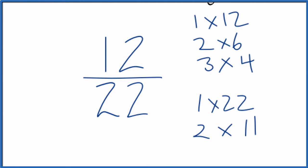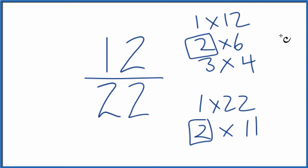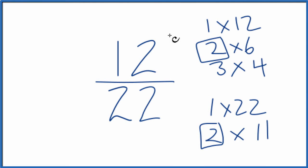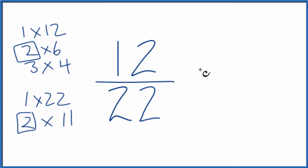So these are the factors for 12, and then for 22. We're looking for the greatest common factor, and it looks like the greatest common factor is going to be 2. So we'll divide 12 by 2 and 22 by 2 to simplify 12/22.